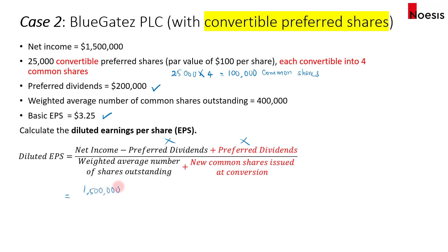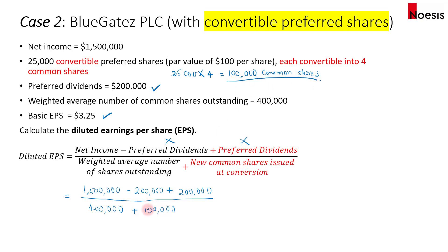So there will be $1.5 million in net income, minus the preferred dividends, and then we add back the preferred dividends — these two terms cancel out. We then divide by the weighted average number of shares outstanding of 400,000, plus the 100,000 shares from the conversion. That's 500,000 shares. With $1.5 million in the numerator and 500,000 shares in the denominator, that gives us $3.00 per share. Notice that the diluted EPS is less than the basic EPS of $3.25, which shows the dilutive nature of the convertible preferred shares.